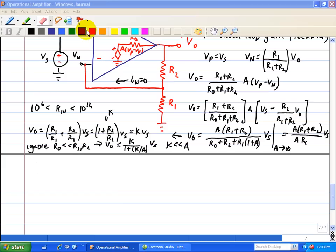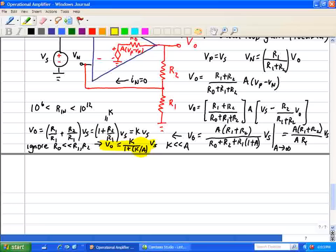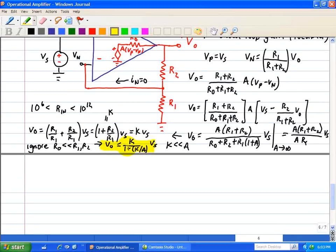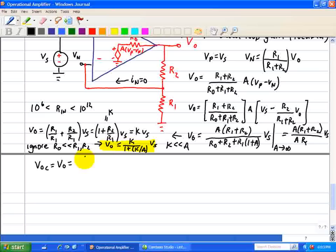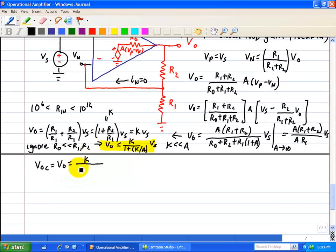First, we note this expression here. VO is equal to K divided by 1 plus K divided by A times VS. And that's basically the open circuit voltage, so VOC equals VO, which is K divided by 1 plus K divided by A times VS.